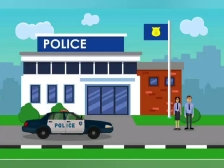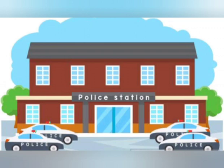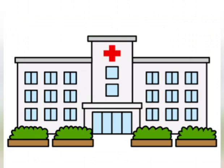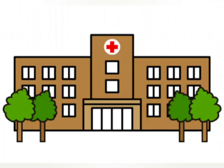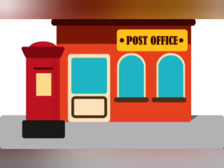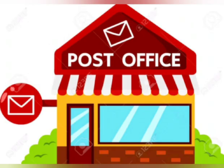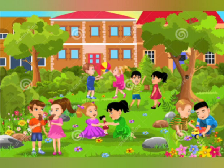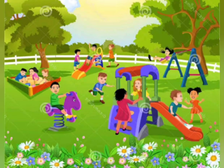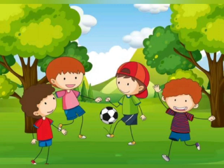Police station is a neighborhood place where we go to register a case in case of a fight or a robbery. Hospital is a place where we go when we fall sick. The doctors and nurses in a hospital take care of the patients. Post Office is a neighborhood place where we go to buy stamps and post our letters. Park is where we go to play outdoor sports and games such as cricket, football and many more.